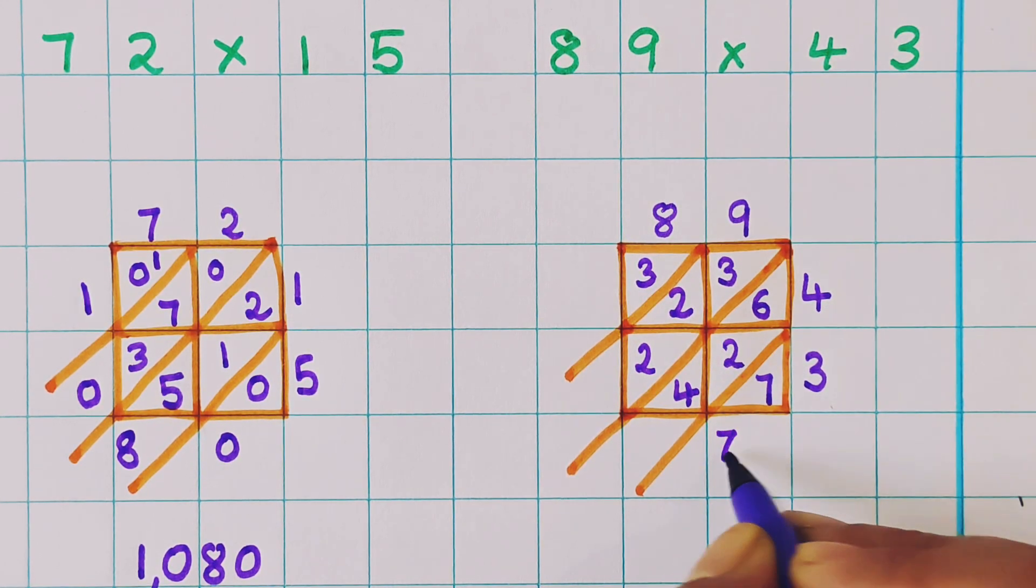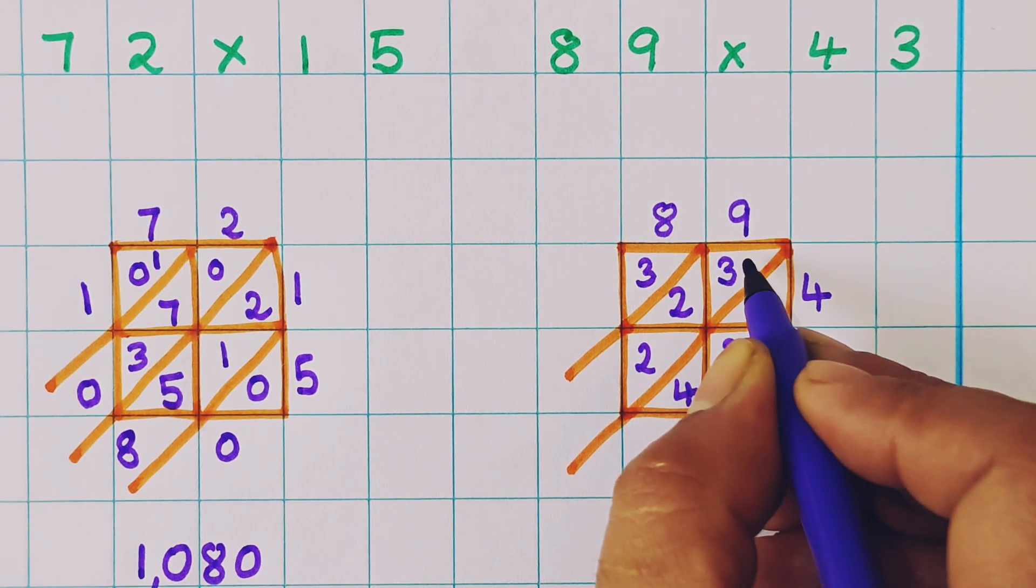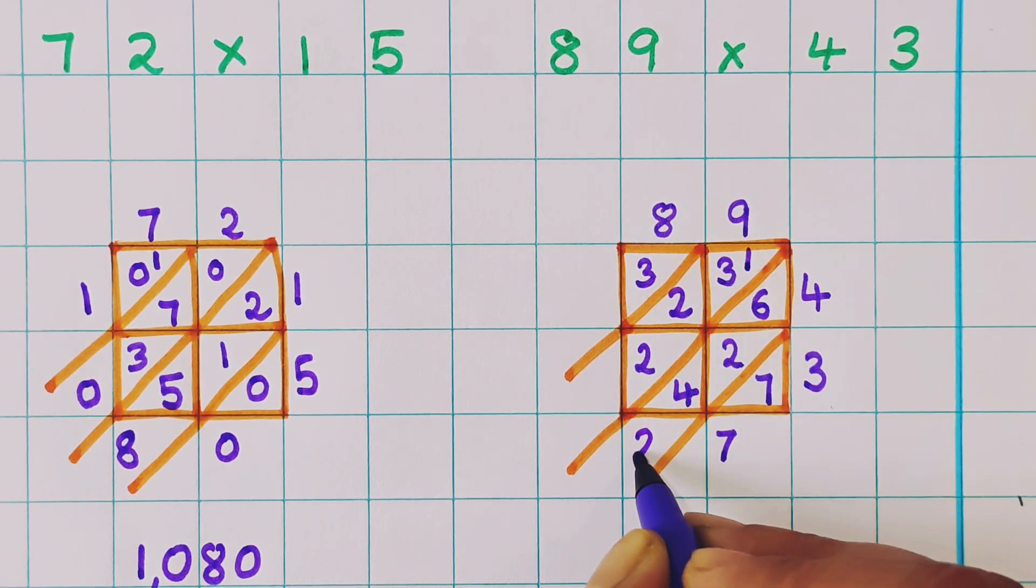7 plus nothing, 7. 6 plus 2, 8. 8 plus 4, 12. So 1 I will write as a carry over and 2 over here.